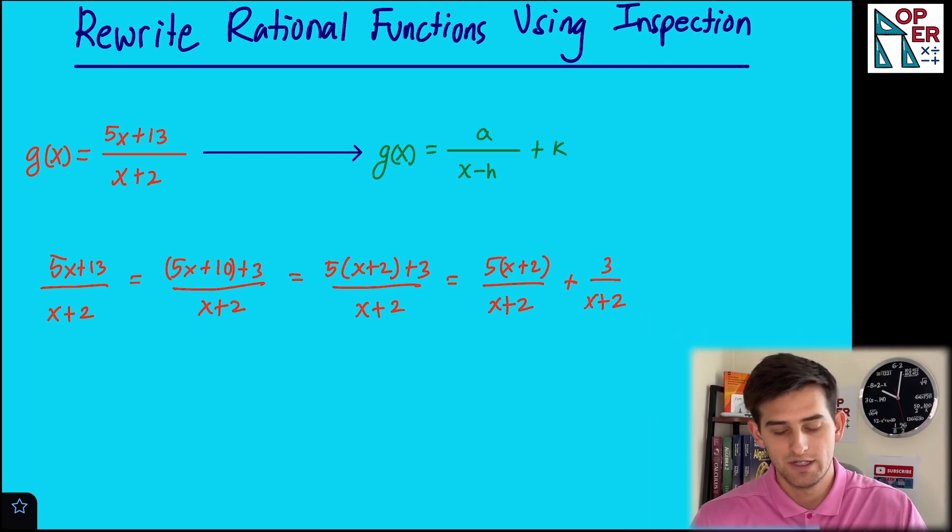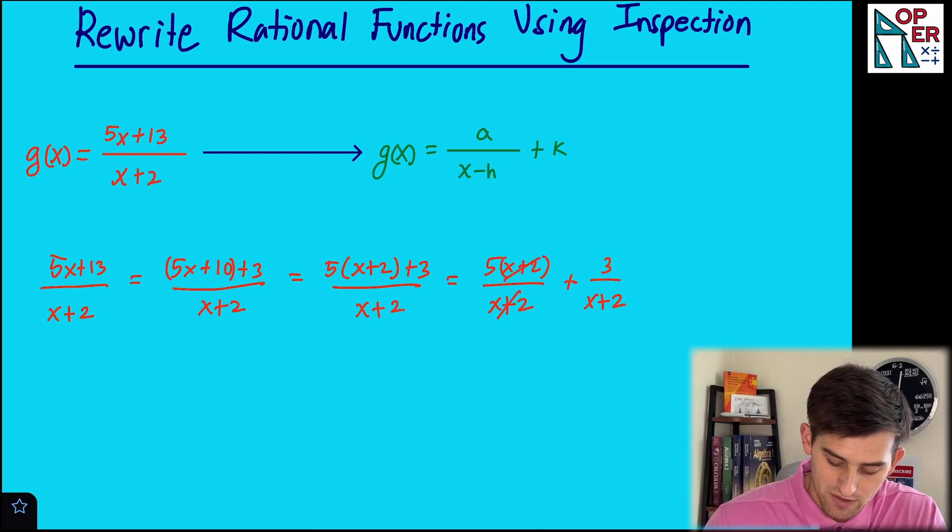Okay, so now what we've done is our fraction on the left, 5 times (x plus 2) over (x plus 2), these x plus 2s will cancel. So now we're left with 5 plus 3 over (x plus 2).